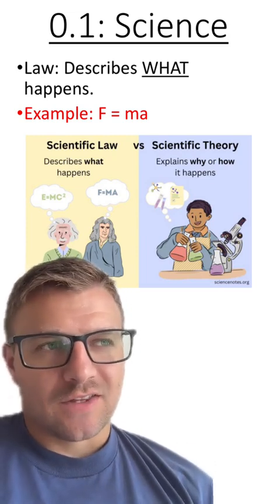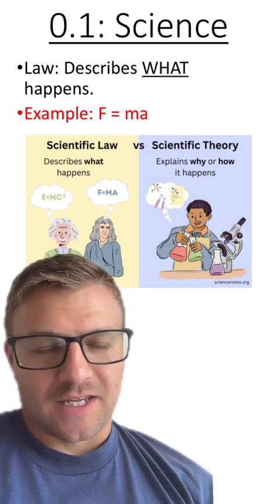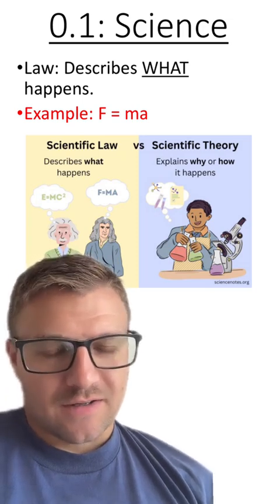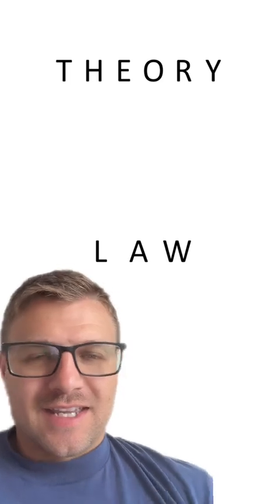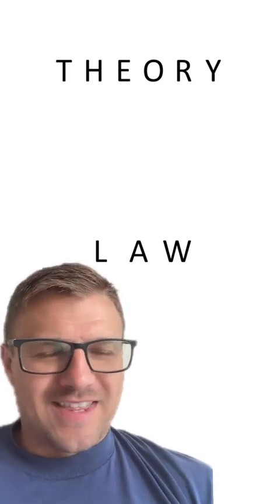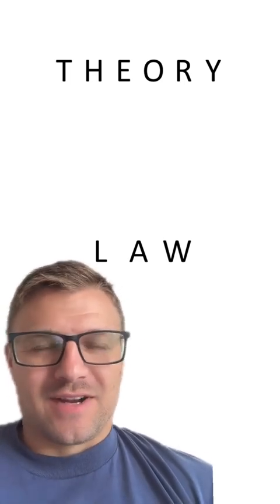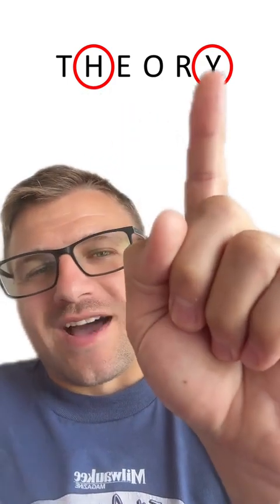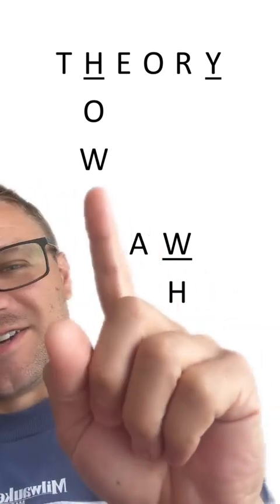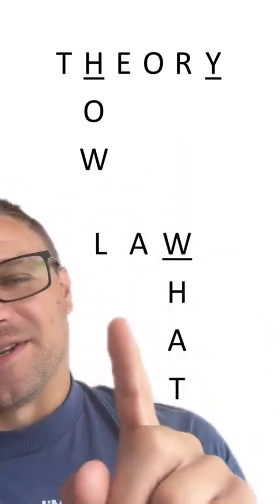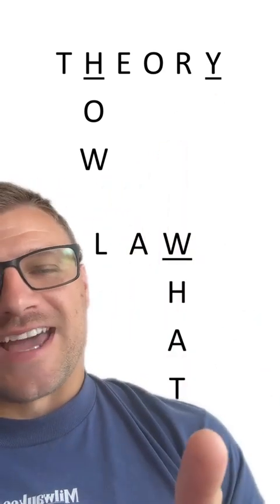It's again important to understand that a scientific law and a scientific theory are two separate things. And one is not better than the other. They just explain science in a different way. Here's a simple way that a student actually showed me that I absolutely love about remembering the difference between a theory and a law. Remember that the word theory has an H and a Y in it. And the word law has the letter W. That's because theories explain how and why things happen, while laws describe what happens.